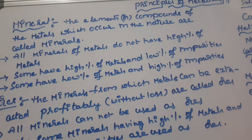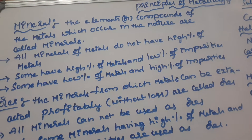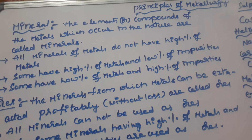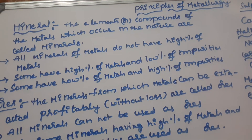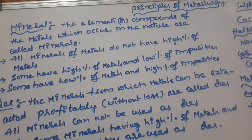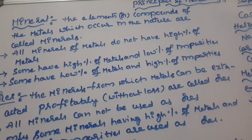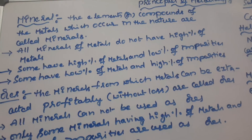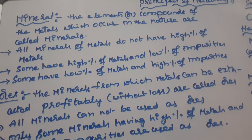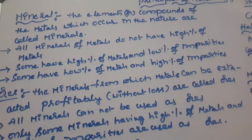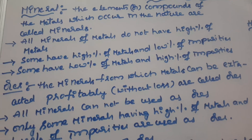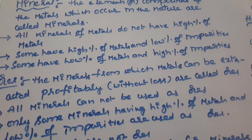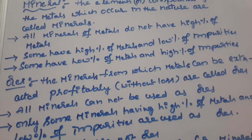The elements or compounds of metals which occur in nature are called minerals. In nature — meaning in the crust of the earth — metals are available as elements or compounds along with impurities. All minerals do not have the same percentage of metal or impurities. Some have a high percentage of metals and low percentage of impurities; others have low percentage of metals and high percentage of impurities.